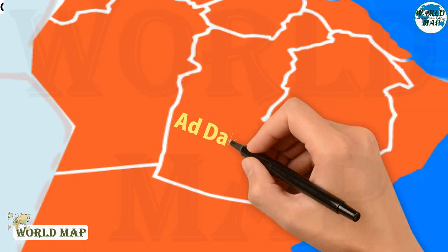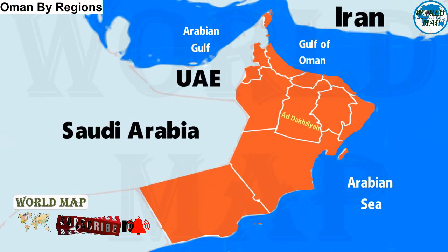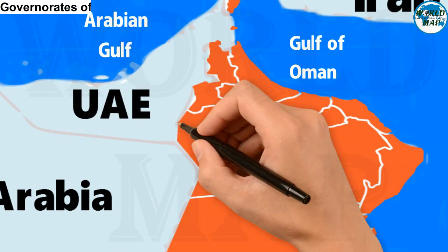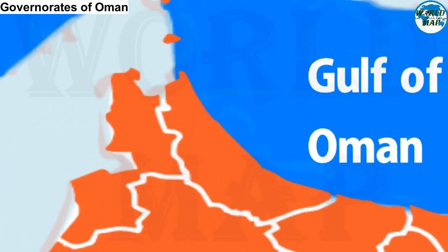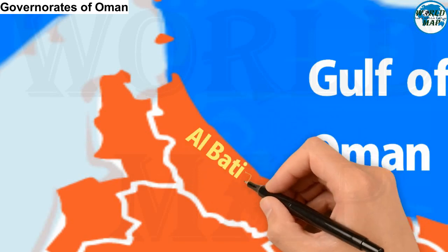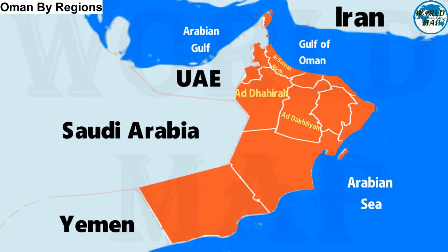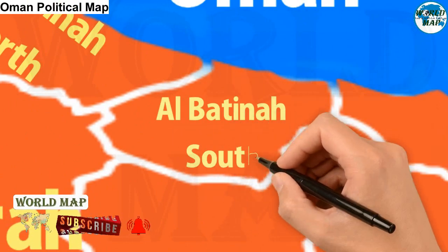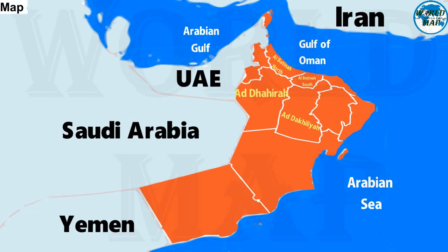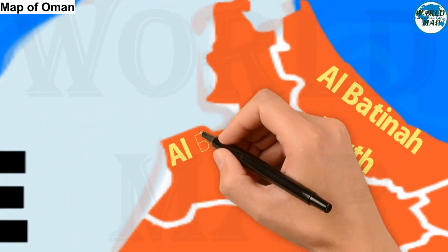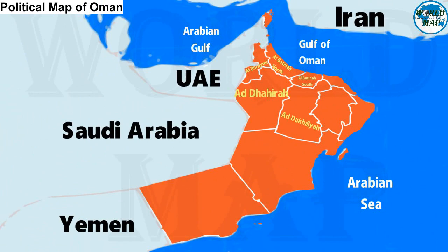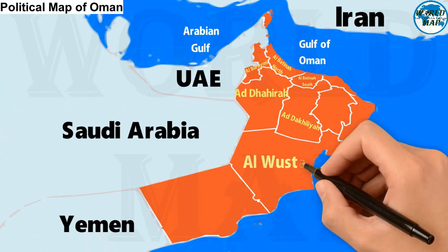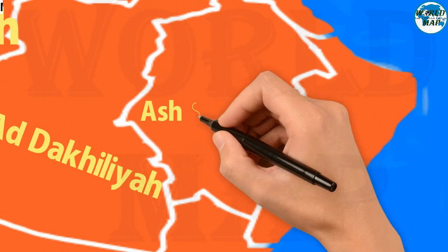Number 1: Ad-Dakhaliyah. Number 2: Ad-Jahira. Number 3: Al-Batina North. Number 4: Al-Batina South. Number 5: Al-Burami. Number 6: Al-Wusta. Number 7: Ash-Sharkiyah North.